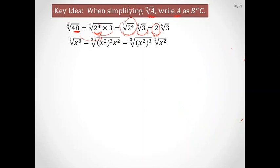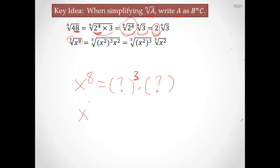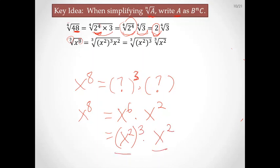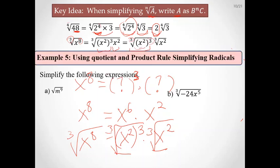Another example: simplify the cube root of x⁸. We need to write this as a cube of something times a remainder. We have x⁸ = x⁶ · x² = (x²)³ · x². Taking the cube root gives x² times the cube root of x².